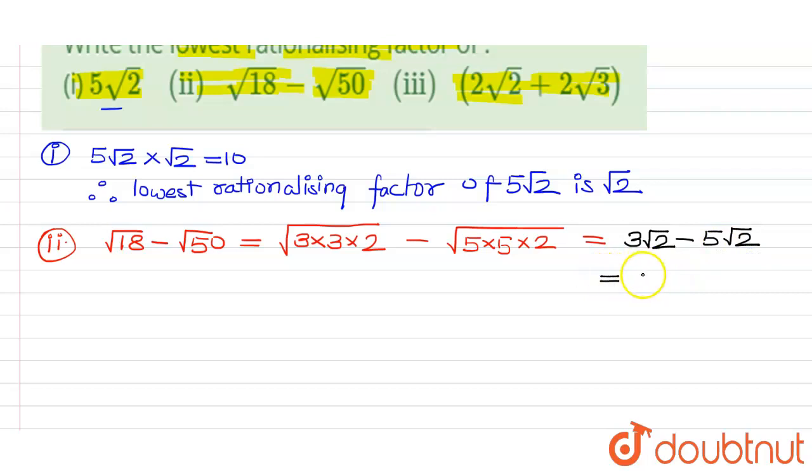So its value is minus 2 root 2. Now, its lowest rationalizing factor is root 2.